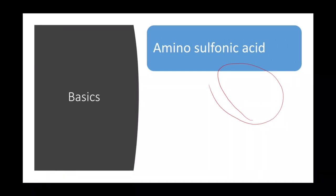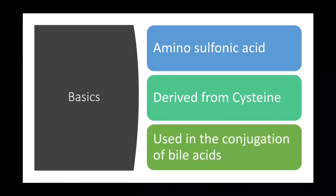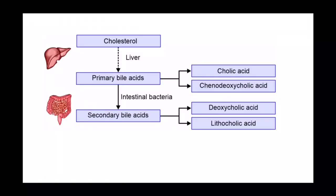Taurine is derived from the amino acid cysteine. The role of taurine in the body is its use in the conjugation of bile acids. So what are bile acids? These are derivatives of cholesterol.